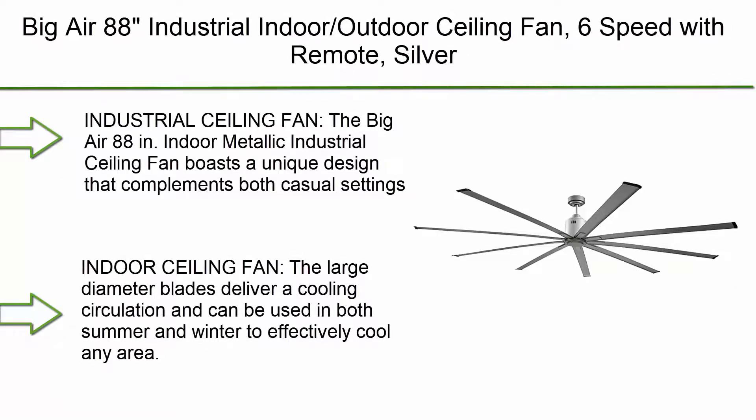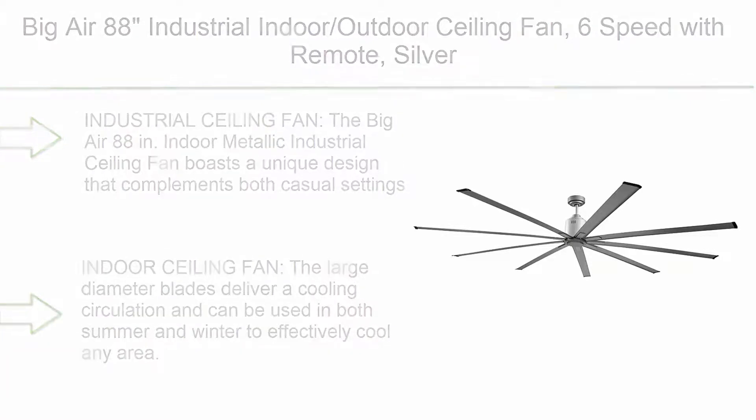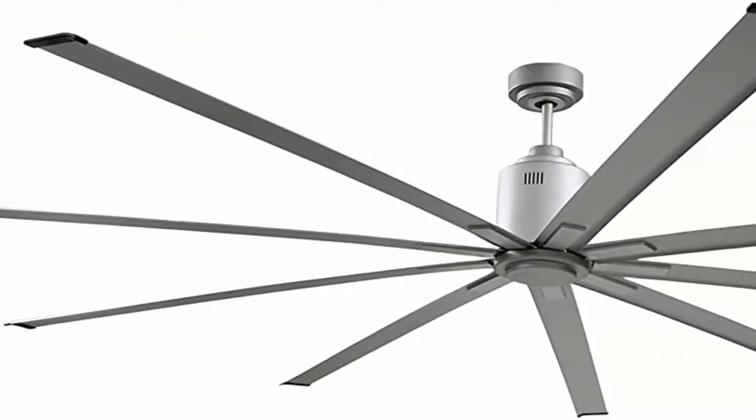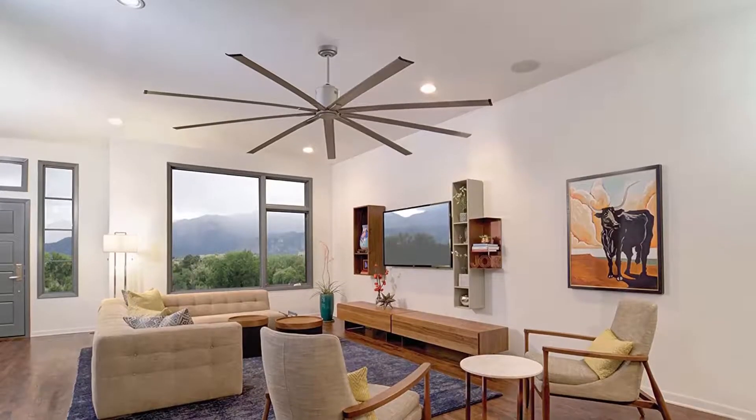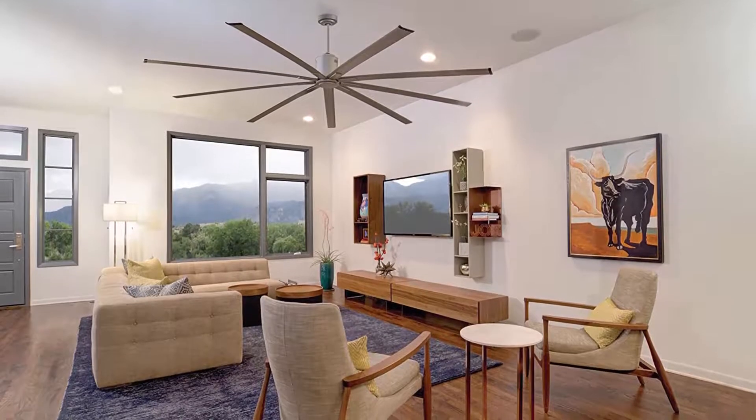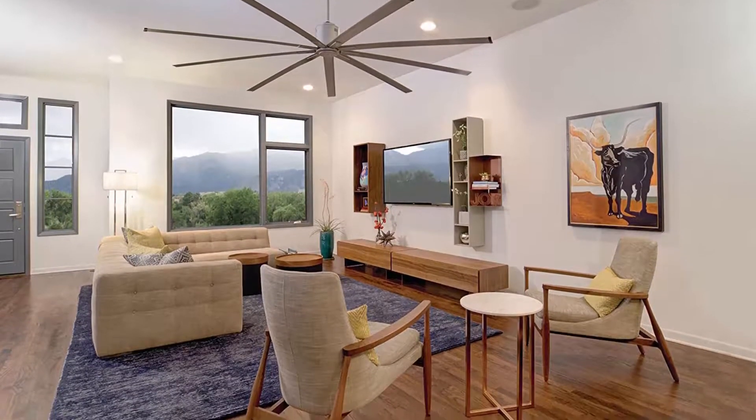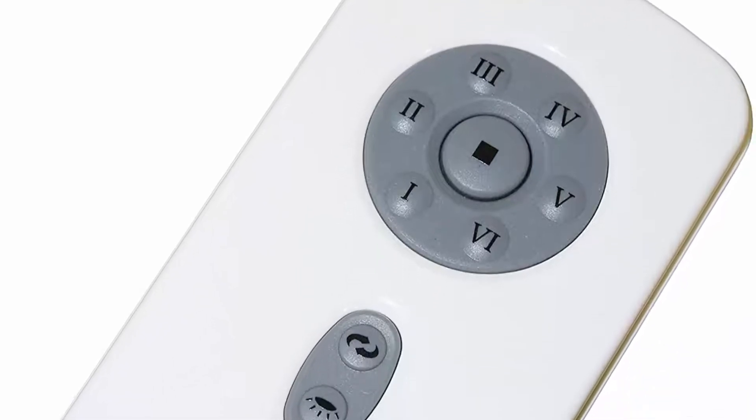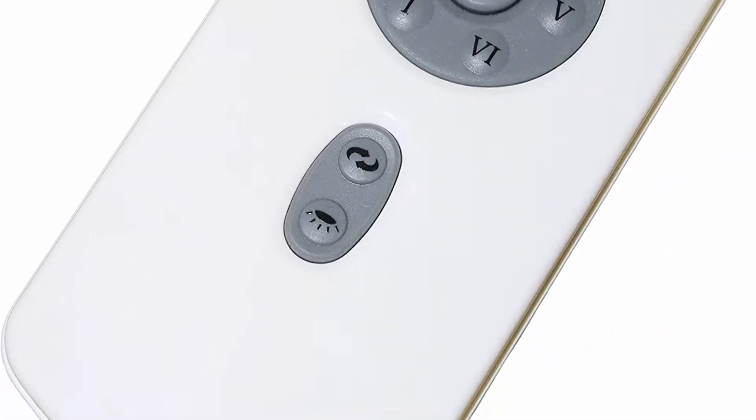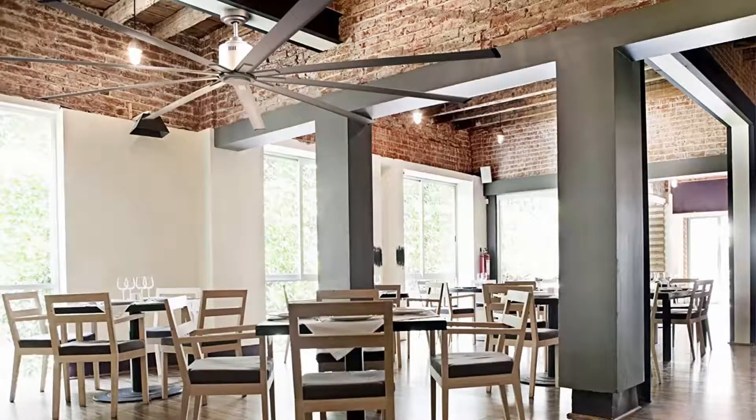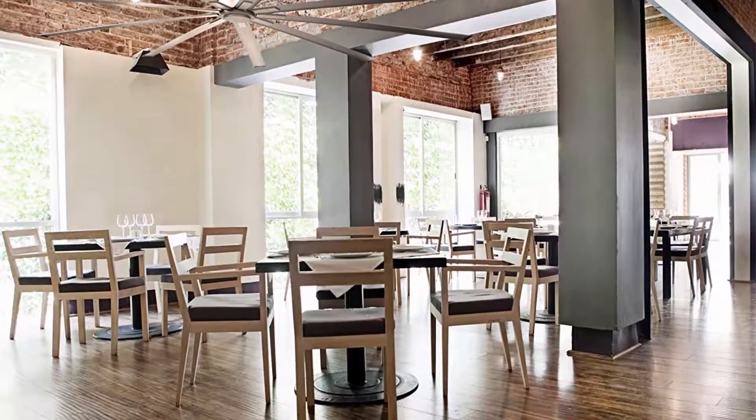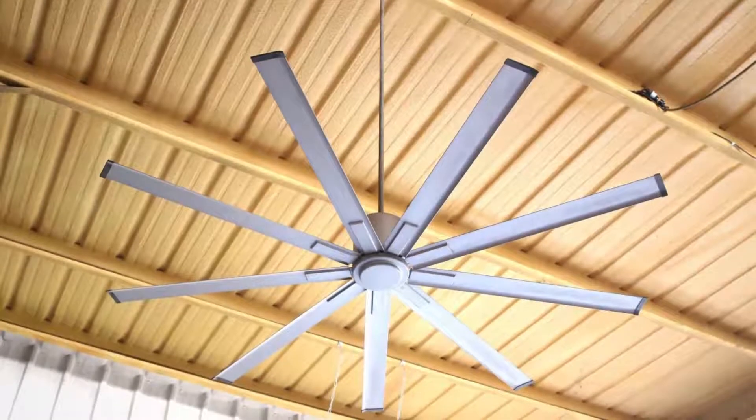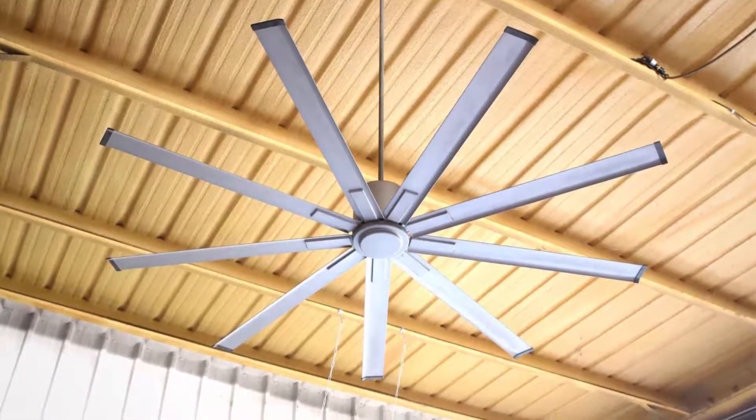Top 3. Big Air 88 industrial indoor outdoor ceiling fan, six speed with remote, silver industrial ceiling fan. The Big Air 88 inch indoor metallic industrial ceiling fan boasts a unique design that complements both casual settings such as shops and barns, and sophisticated areas like in your office or living room. Perfect for garage, commercial, residential, any home improvement project that wants a sleek modern look. Indoor ceiling fan. The large diameter blades deliver a cooling circulation and can be used in both summer and winter to effectively cool any area. Includes a six speed remote to provide the ultimate in custom comfort. Our fans are damp rated, meaning they can take any covered patio and make it a better space.